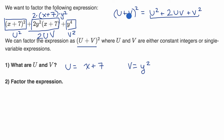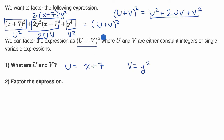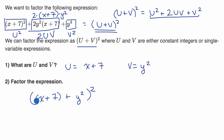You can view it as u plus v squared, where u equals x plus seven and v equals y squared. Using that, we can now actually factor the expression. This whole expression equals u plus v squared, which is x plus seven plus y squared, all squared. You don't have to write the parentheses — you can write it as x plus seven plus y squared, squared.